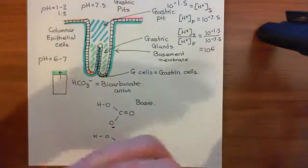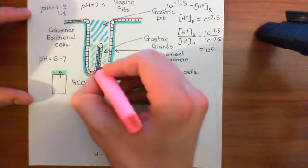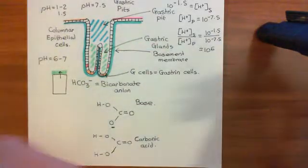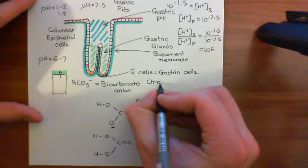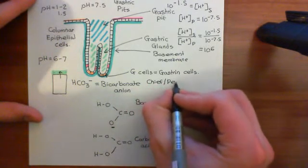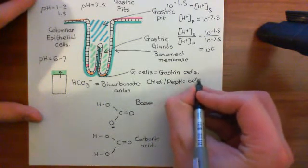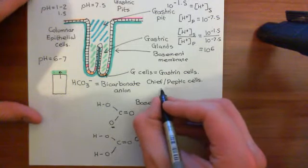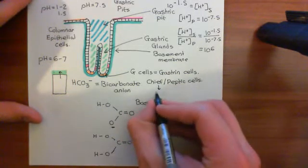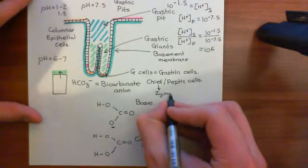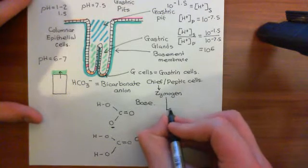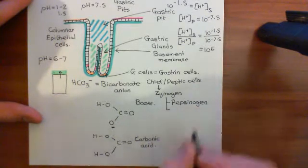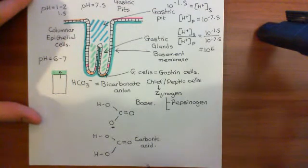A little bit higher up the gastric glands, but still very close to the bottom, you have a type of cell known as a chief cell or a peptic cell — shown here in pink. These cells secrete the precursors to active protease enzymes, known as zymogens, which are inactive precursors to enzymes. The two that they secrete are pepsinogen, which is the precursor to the protease enzyme pepsin — a very important protease that breaks down proteins.